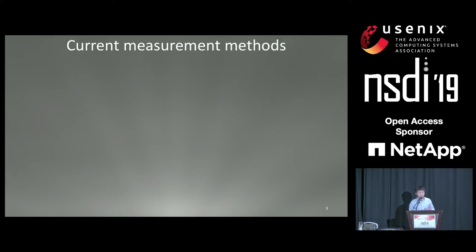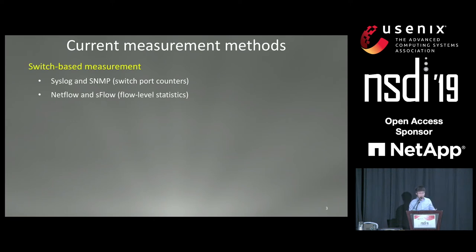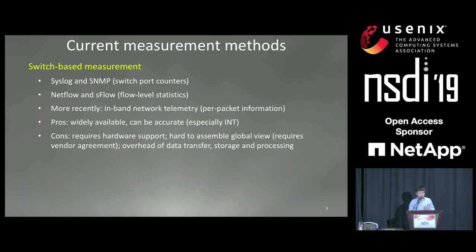There are generally two classes of network measurement methods in the literature. The first class is called switch-based measurement. Traditionally, we have Syslog and SNMP for pulling switch port counters, and NetFlow and sFlow for collecting flow-level stats. More recently, we have in-band network telemetry, which enables collecting per-packet information on every hop in the network. These switch-based methods are widely available and can be very accurate, especially for in-band telemetry. However, these methods require hardware support, are local to the switch, and you need to assemble a global view across switches. As soon as you get per-packet information in in-band telemetry, the overhead of storing, transferring, and processing the data can be huge.